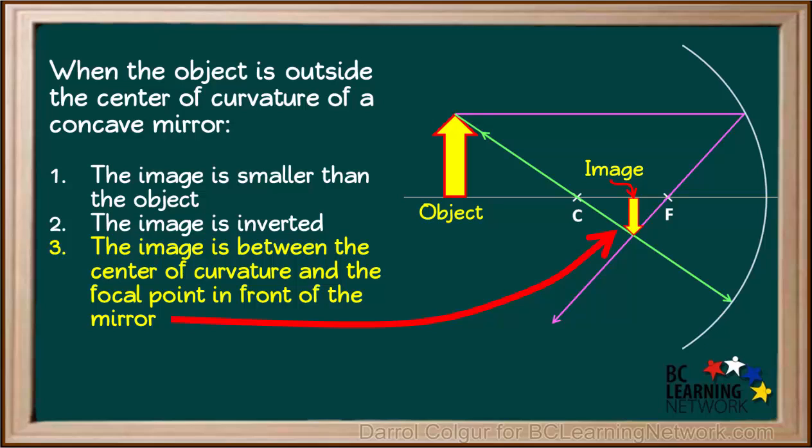The position of the image is between the center of curvature and the focal point in front of the mirror on its shiny side. And because the image is formed by solid rays that cross each other, this is a real image. If the sensor of a digital camera was placed here, the image would be recorded on it.